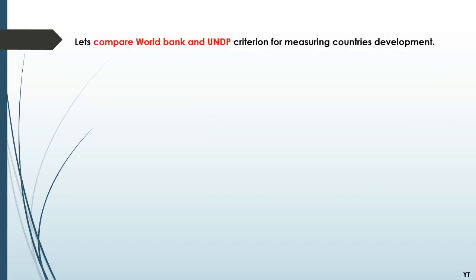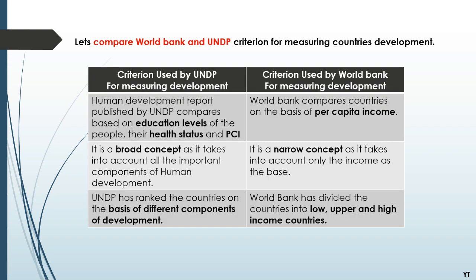Now let's compare both methods — World Bank and UNDP. The Human Development Report published by UNDP compares countries based on educational level of the people, their health status, and per capita income. The World Bank compares countries on the basis of only per capita income. UNDP's approach is a broad concept as it takes into account all the important components of human development, whereas the World Bank's is a narrow concept taking only income as the base. UNDP ranks countries on the basis of different components of development, while the World Bank divides countries into low, upper, and high income countries.